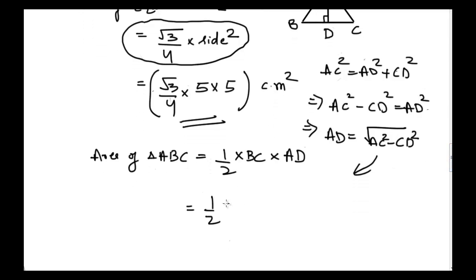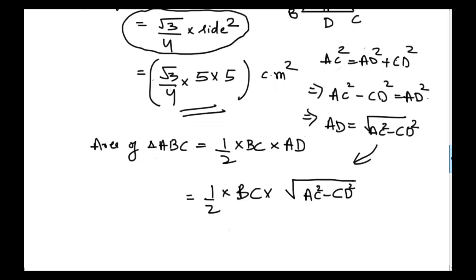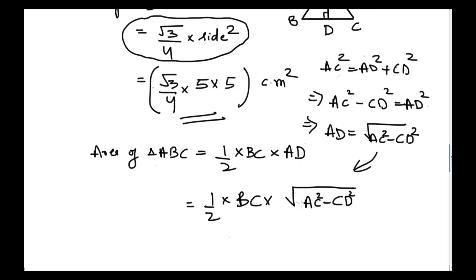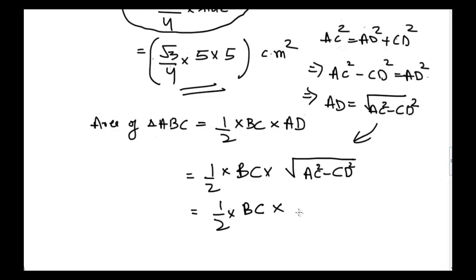So the area of triangle ABC is equal to 1/2 times BC times square root of AC squared minus CD squared. Now, we know that all three sides are equal in an equilateral triangle and AC is equal to BC, so we can replace AC with BC. We are basically trying to eliminate as many variables as possible. So we get 1/2 times BC times square root of BC squared minus CD squared. Let's mark this as equation number one.